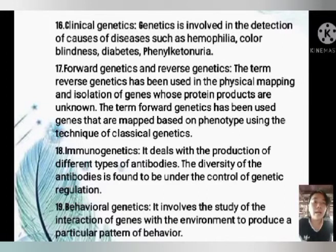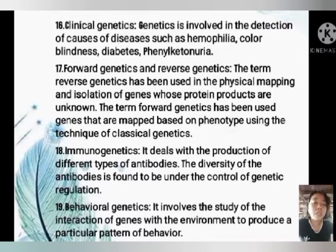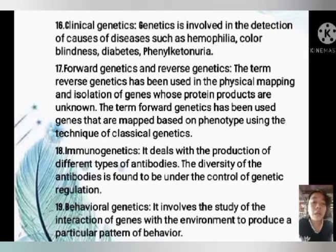Number 16, clinical genetics — it is involved in the detection of causes of diseases such as hemiplegia, color blindness, diabetes, and phenylketonuria. Clinical genetics is the study of the causes and inheritance of genetic disorders. Other aspects of clinical genetics include the study of chromosomal aberrations such as those that cause mental retardation and Down syndrome, and immunogenetics — the genetic aspects of the immune response and the transmission of genetic factors from generation to generation.